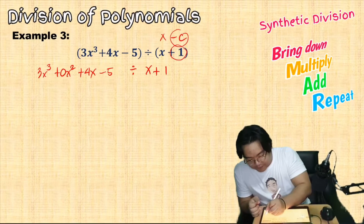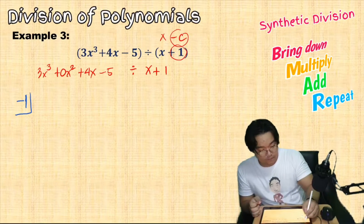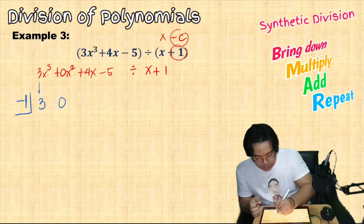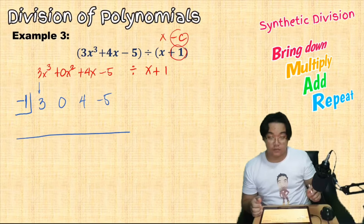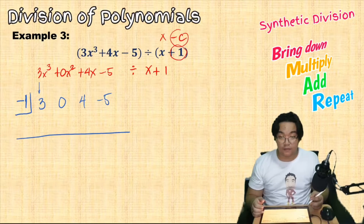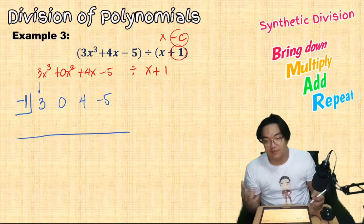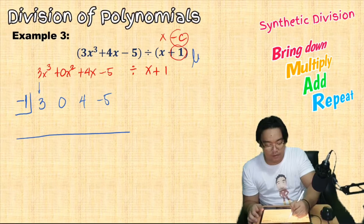Since C is negative 1, our synthetic divisor is negative 1 and our coefficients are 3, 0, 4, and negative 5. Performing a long division here would be a very long process, but since the divisor is a linear polynomial we can use synthetic division.